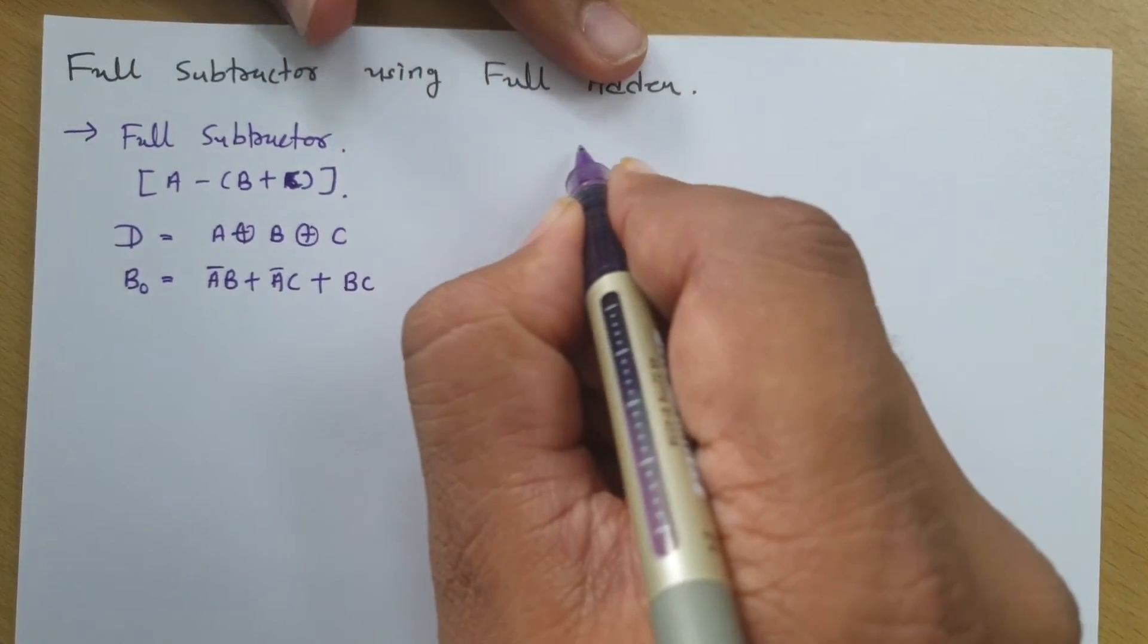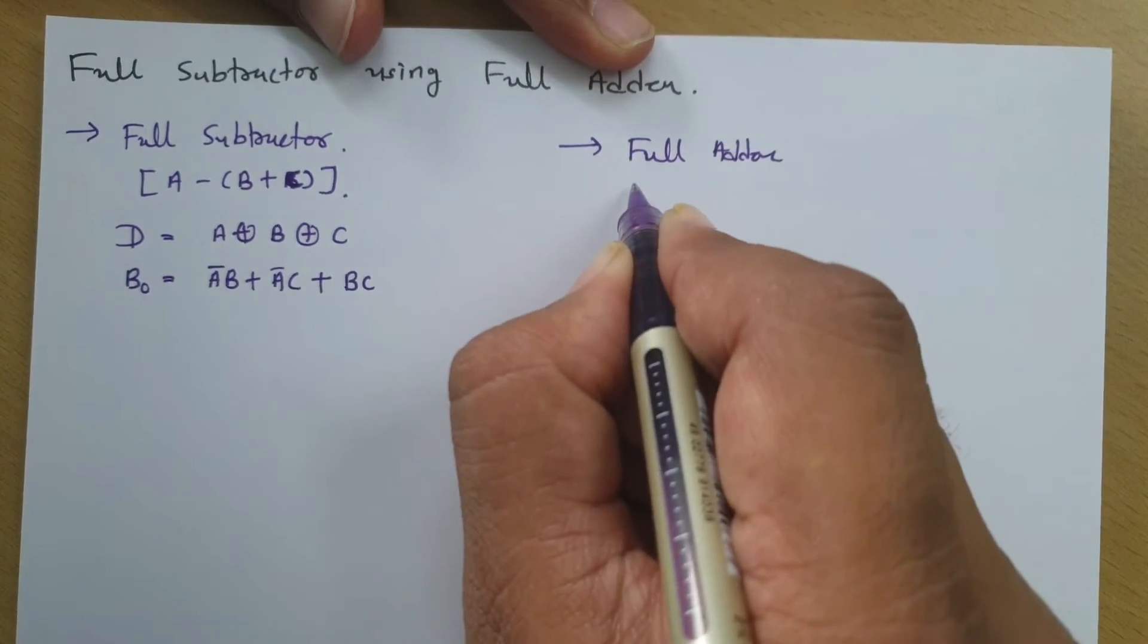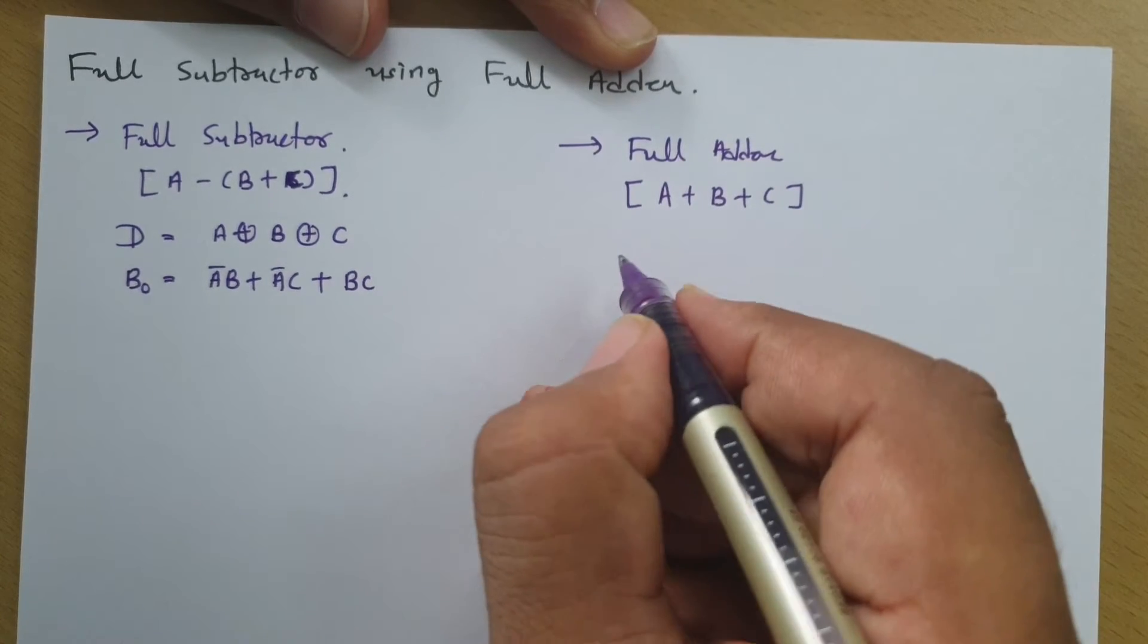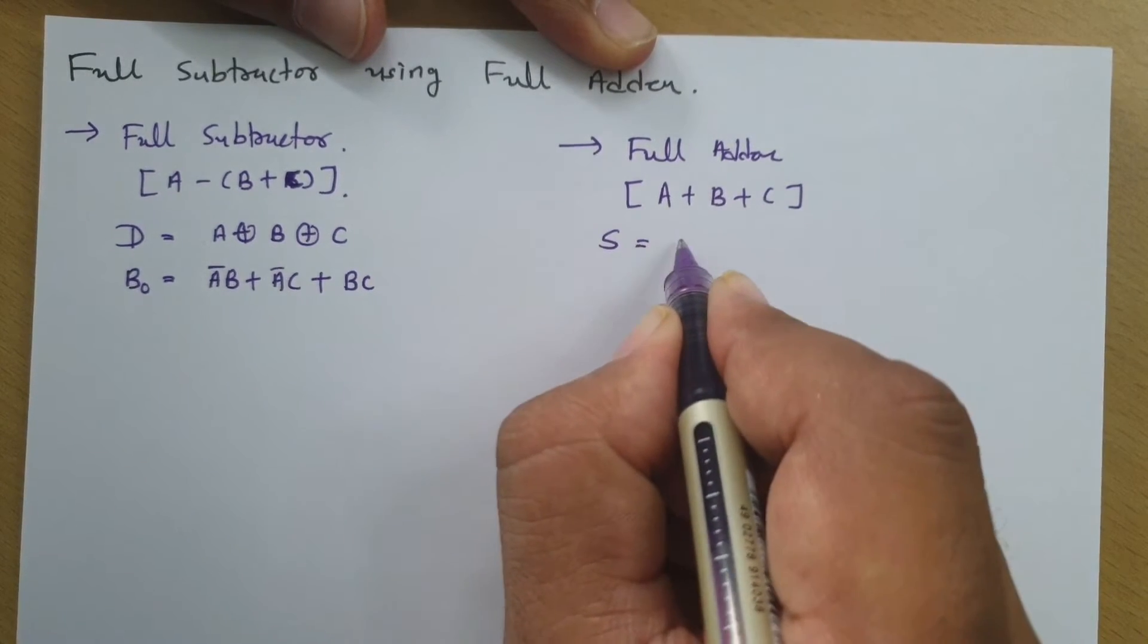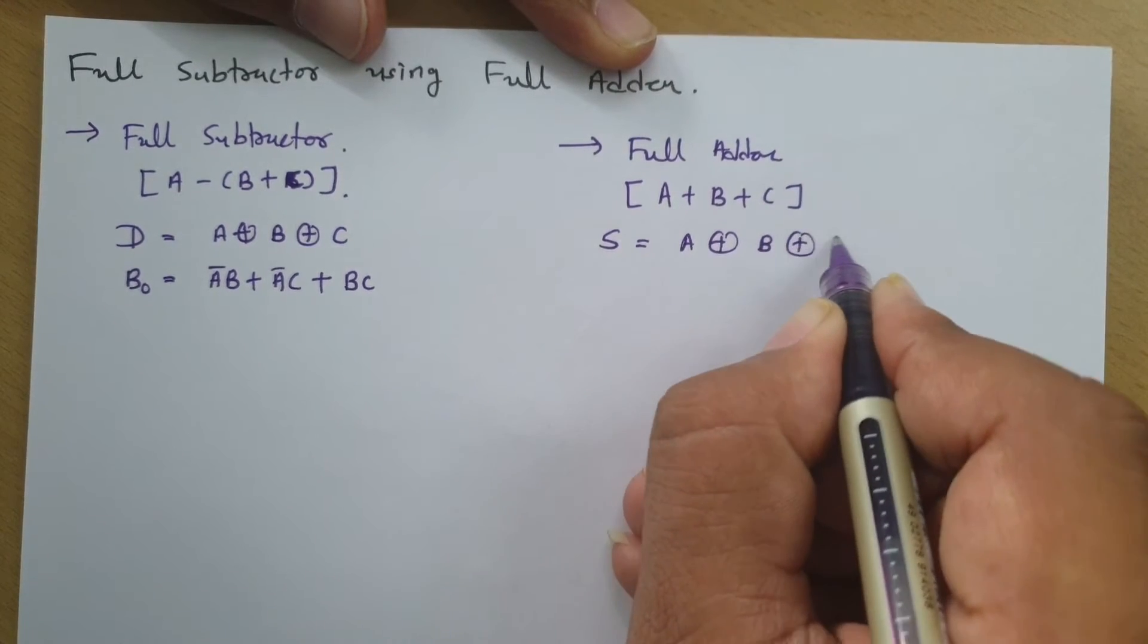And if you observe full adder circuit, in full adder circuit we perform A plus B plus C operation, where sum is A XOR B XOR C.